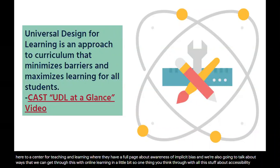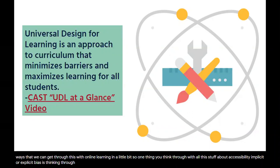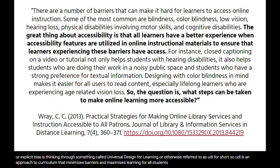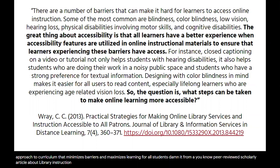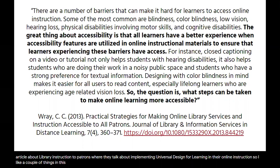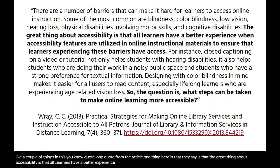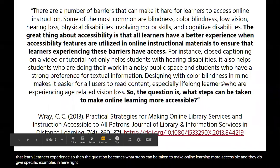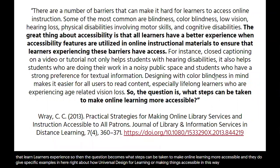Thinking through accessibility, implicit bias, and explicit bias leads us to something called universal design for learning, or UDL. UDL is an approach to curriculum that minimizes barriers and maximizes learning for all students. There's an example from a peer-reviewed scholarly article about library instruction where they implement UDL in online instruction, noting that all learners have a better experience when accessibility features are utilized in online instructional materials to ensure those experiencing barriers have access.